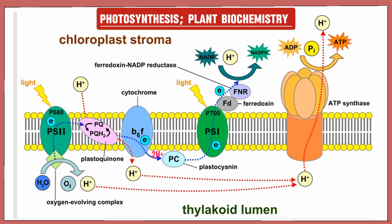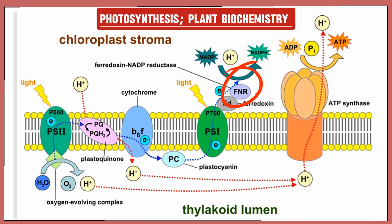Plastocyanin picks up the two electrons and transports them to Photosystem I. At Photosystem I they receive an energy boost, and are then transported to the next mobile carrier, ferredoxin. Ferredoxin transports them to ferredoxin-NADPH reductase, which uses the two electrons plus a proton from the stroma together with NADP⁺ to produce NADPH.